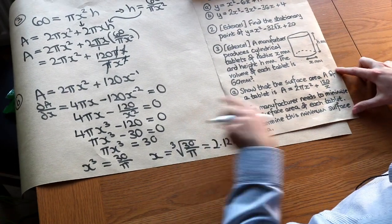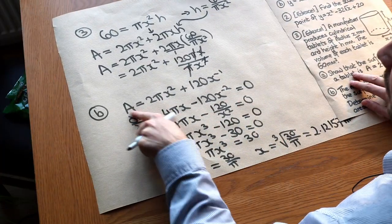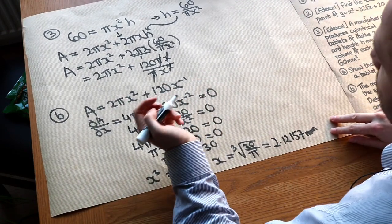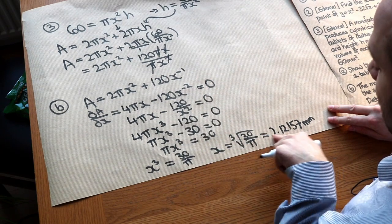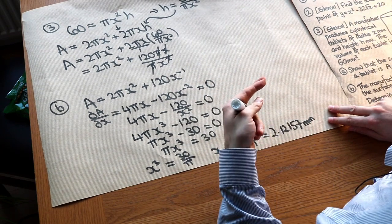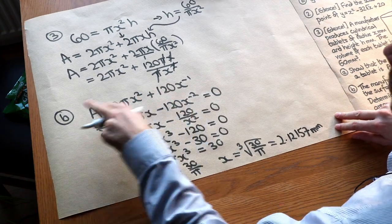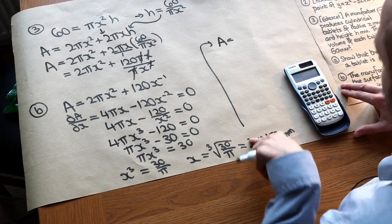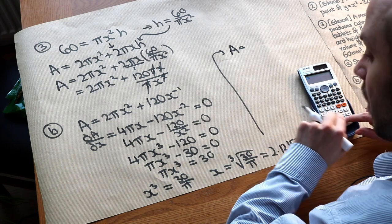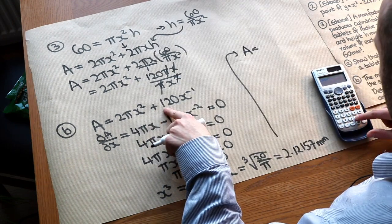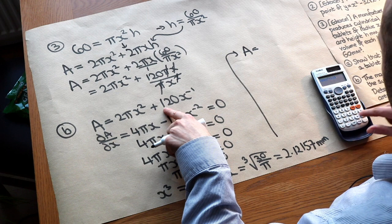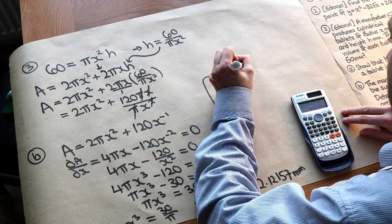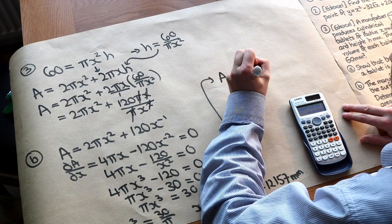We've worked out x, but we want the minimum surface area. We know how to find the surface area in terms of x, so we sub that value back into A. Students often forget this last step — they find x but forget to substitute back to get the actual surface area. Using the calculator with the answer key: 2π·ans² + 120/ans gives a surface area of 84.8 mm².